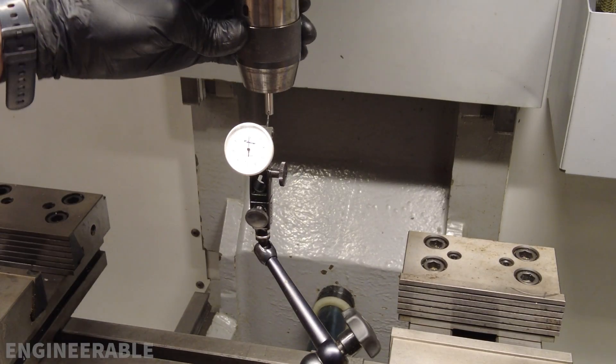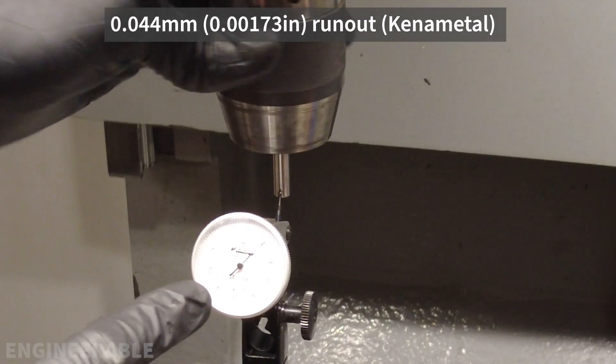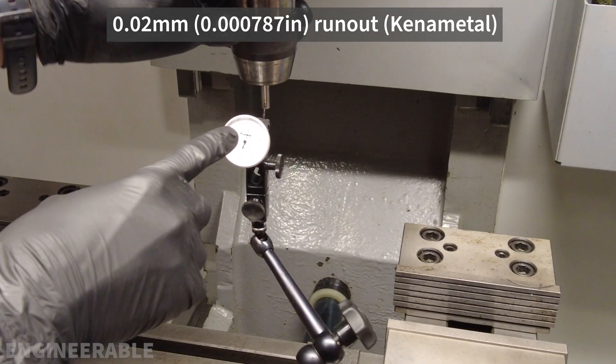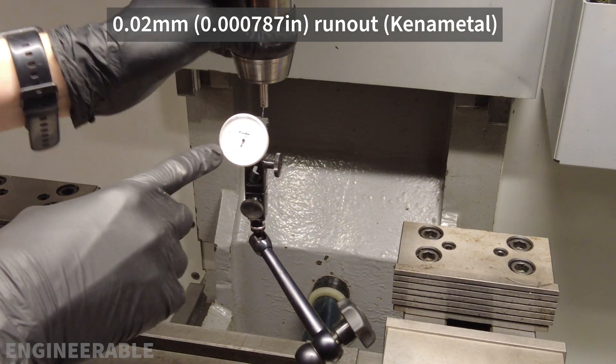As a comparison, this is the Kennametal integrated keyless drill chuck, and at worst I'm getting plus or minus 0.022 millimeters of run-out, and at best it gets about plus or minus 0.01 millimeters of run-out.